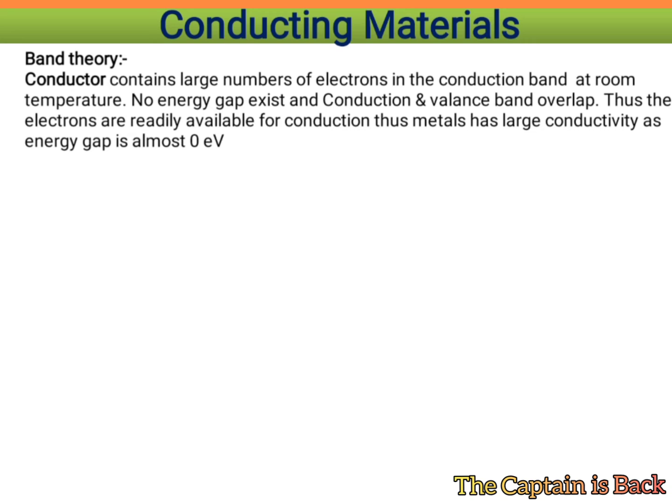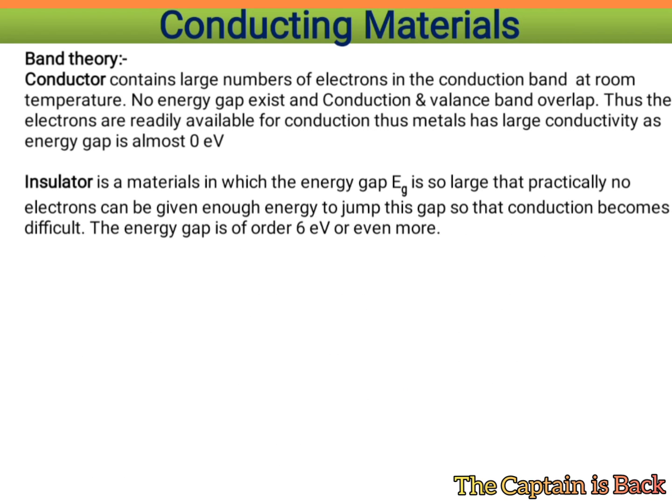According to band theory, conductors contain a large number of electrons in the conduction band at room temperature. No energy gap exists between the conduction band and the valence band, so electrons are readily available for conduction. Thus metals have large conductivity, as the energy gap is almost zero electron volts.